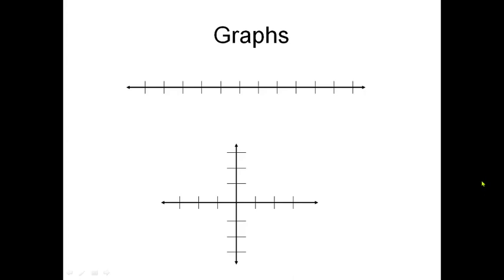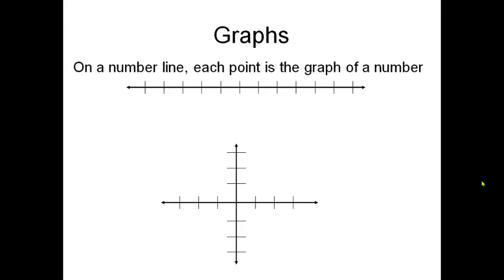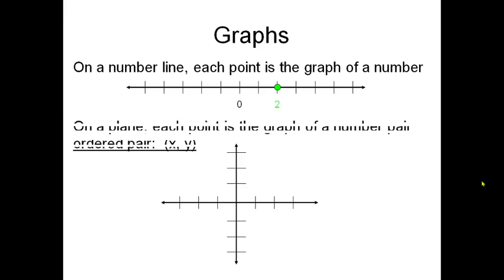Now graph. So on a number line, each point is the graph of a number. For example, this is 0 and 2. Alright. So on plane, each point is the graph of a number pair, ordered pair, in the form of X and Y.